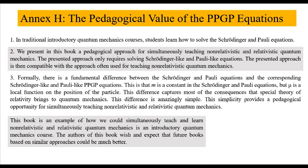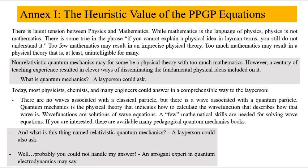Next, the heuristic value of the PPGP equations. There is a latent tension between physics and mathematics. While mathematics is the language of physics, physics is not mathematics. There is some truth in the phrase: if you cannot explain a physical idea in layman terms, you still do not understand it. Too few mathematics may result in an imprecise physical theory. Too much mathematics may result in a physical theory that is, at least, unintelligible for many.